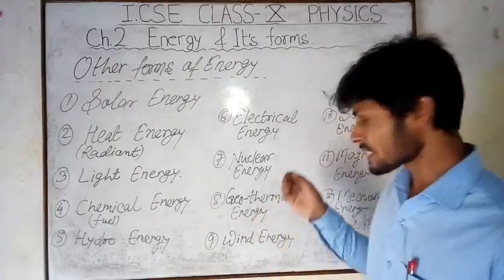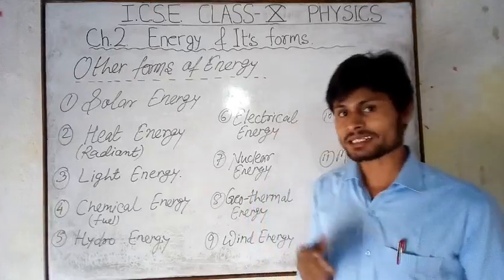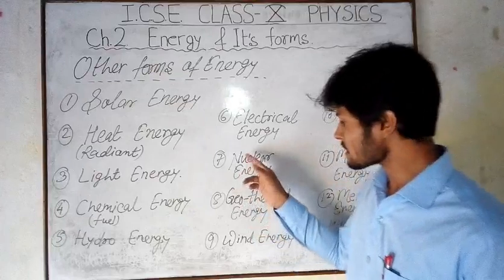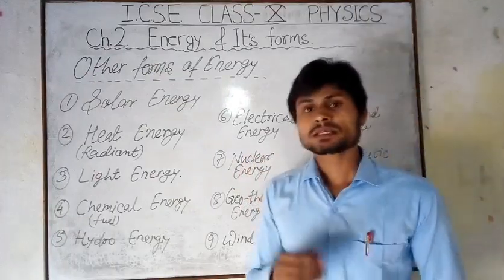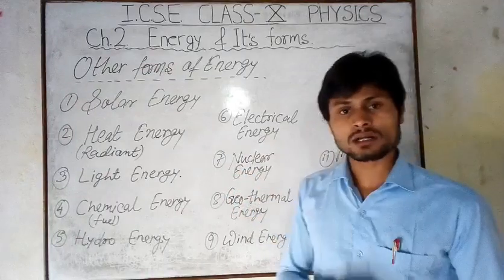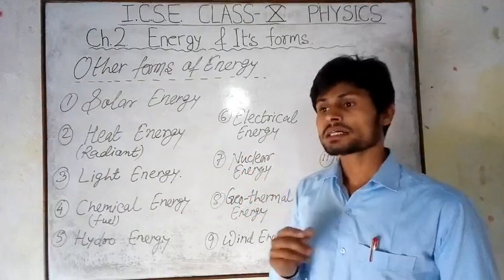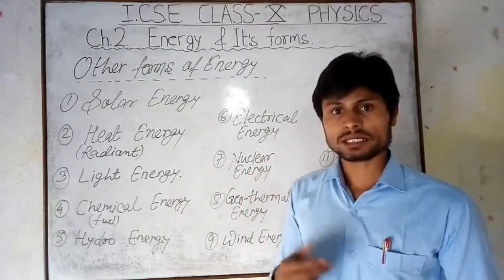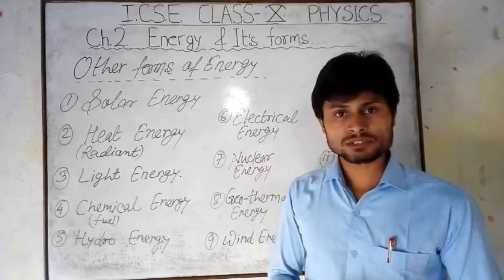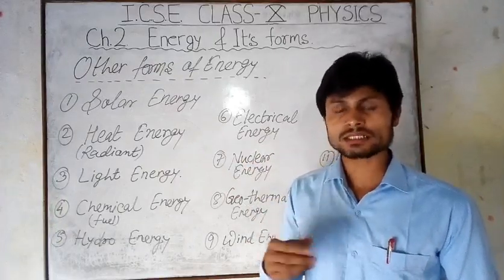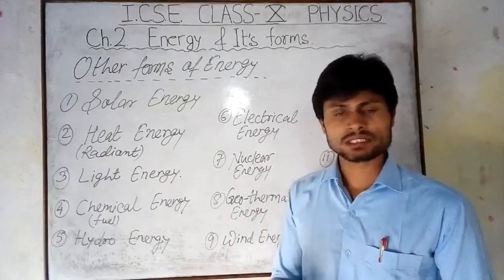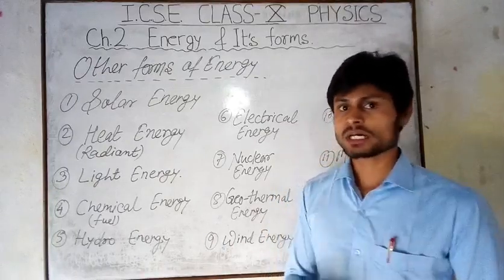In nuclear fusion, nuclei combine and there is also some loss in mass, and this causes nuclear energy. In atomic reactors, this nuclear energy is also called atomic energy. These nuclear fission and fusion reactions are performed in nuclear reactors for the generation of electricity, and for destructive purposes such as atomic bombing.